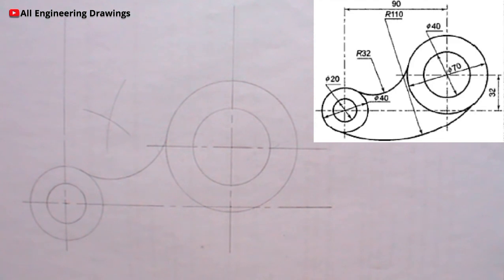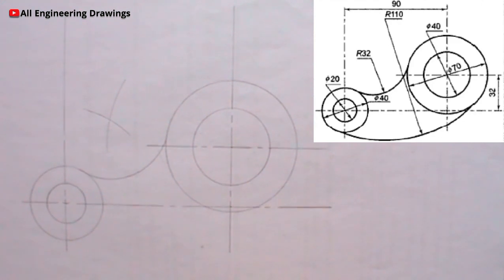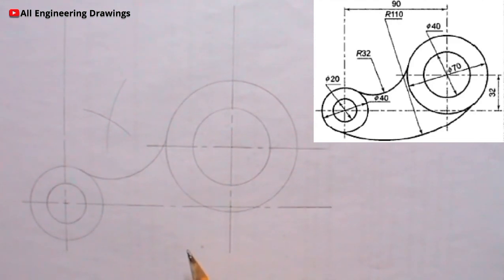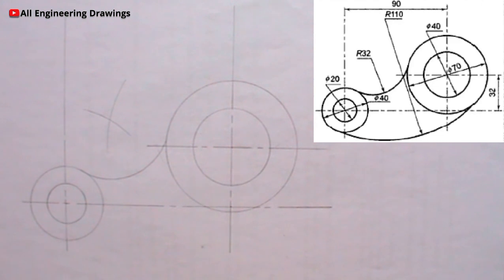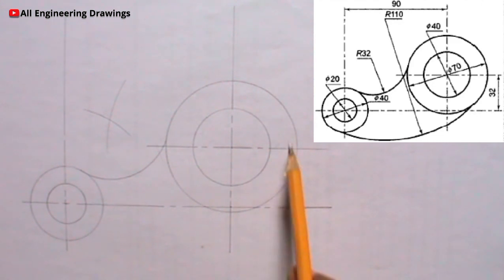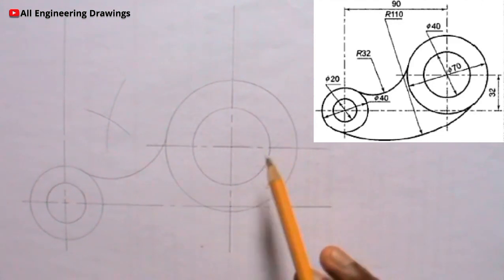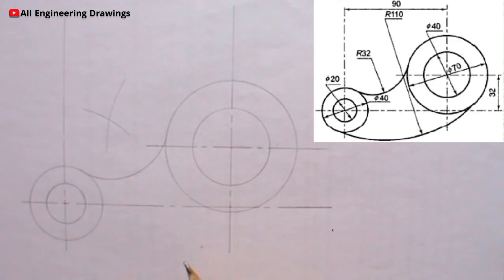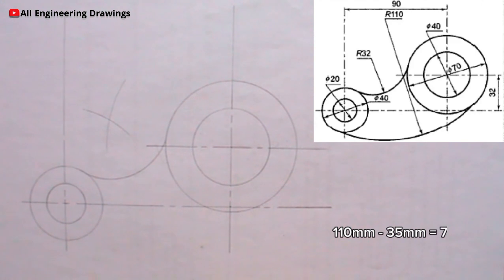Now it is time to produce the lower tangential arc. The lower tangential arc is an internal arc. So to produce it, the radius of the lower tangential arc is 110mm. I will minus the radius, which is 110mm, from the radius of this circle here. So I am minusing 110 minus 35, which will give me 75mm.